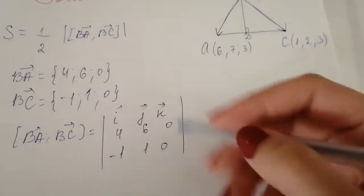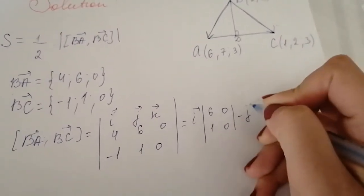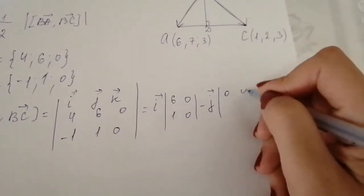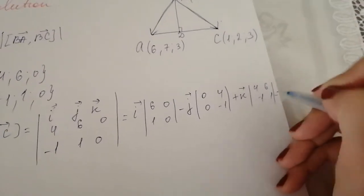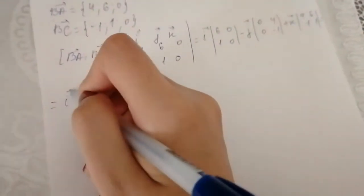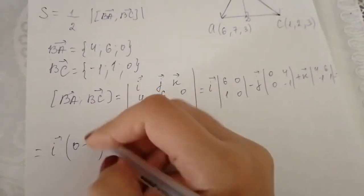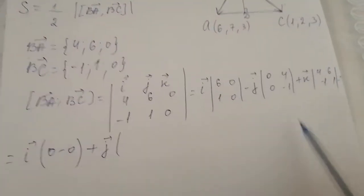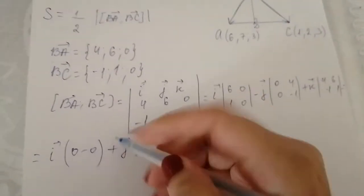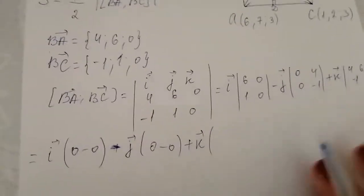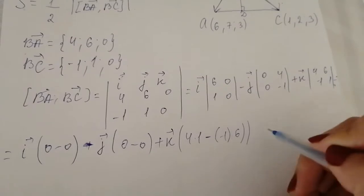Expanding the determinant: the i component is (6×0 − 0×1) = 0, the j component is minus (4×0 − 0×(−1)) = 0, and the k component is (4×1 − (−1)×6) = 4 + 6 = 10.